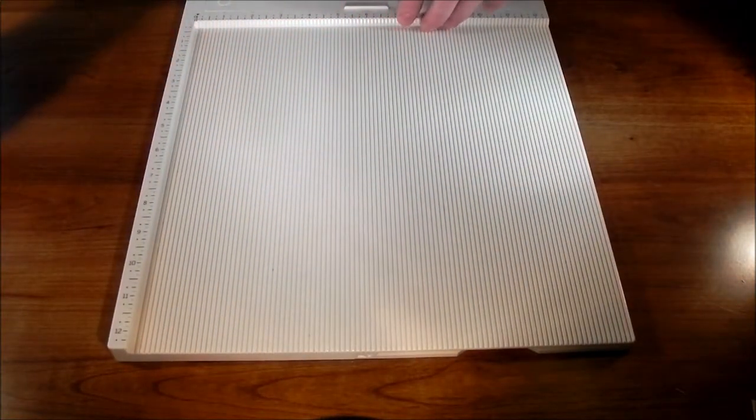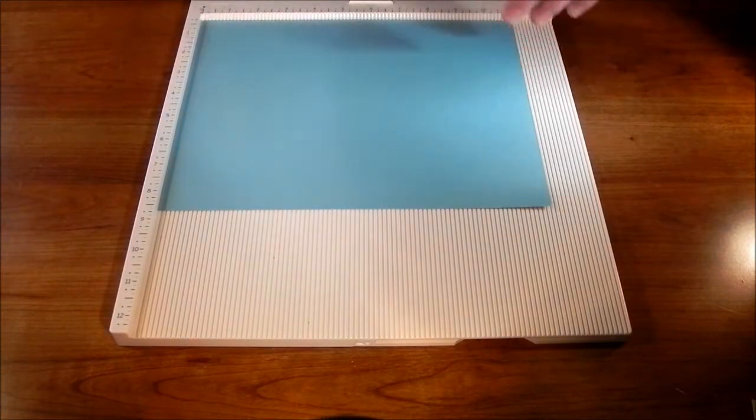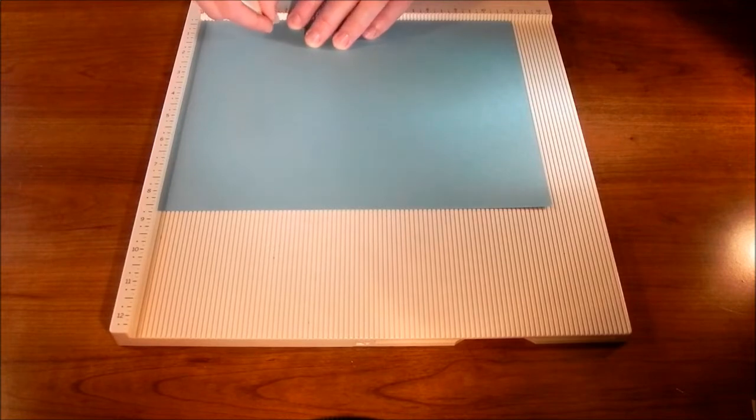So to start, we're going to take our scoreboard, and we'll put the angle tool aside for now. We will be using that in just a minute. So we're going to take our 8.5 by 11 cardstock, and we're going to lay it out horizontally. And then we just need to score at 2 and 3.25.